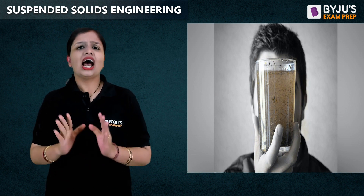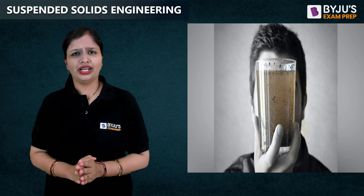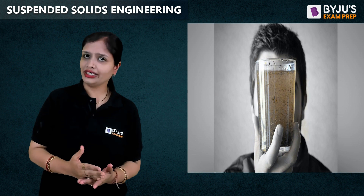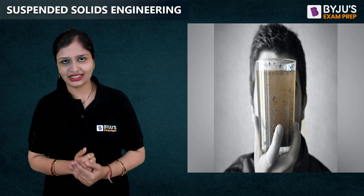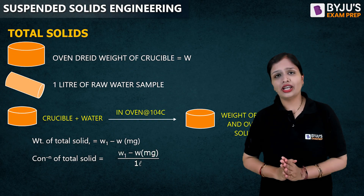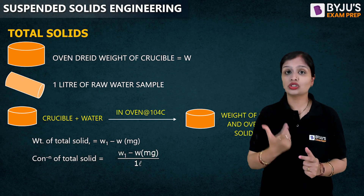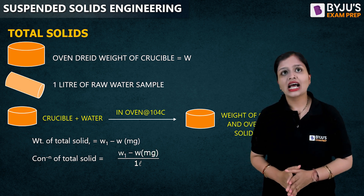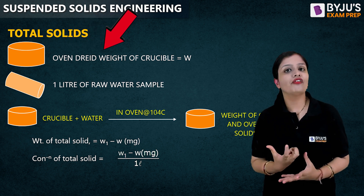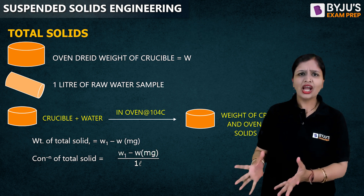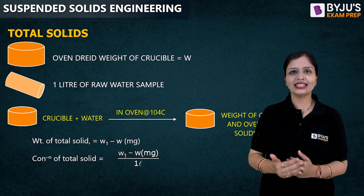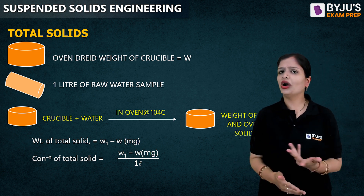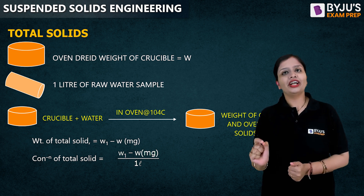Suspended solids and dissolved solids together make total solids. So why not first calculate total solids, then suspended solids and dissolved solids separately? For total solids — which is the summation of suspended solids and dissolved solids — I will be taking an oven-dried weight of crucible, which I will term W. Don't worry about the nomenclature; for easiness let's designate it as W.